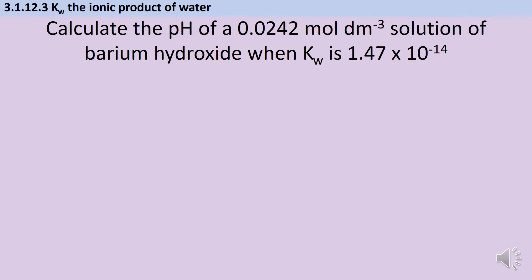Let's look at an example. Here we're trying to calculate the pH of a 0.0242 molar solution of barium hydroxide when KW is 1.47 times 10 to the minus 14. So the first thing I need to do is work out what the concentration of the hydroxide ions will be.